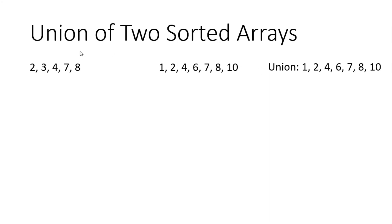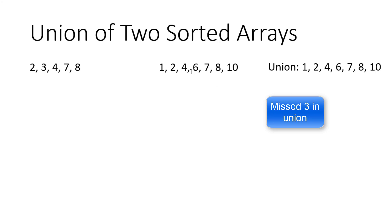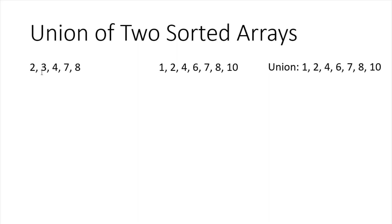As you can see, the union of both arrays is 1, 2, 4, 6, 7, 8, and 10. This means we have not left a single element that is in either array, and we have no duplicates as well.